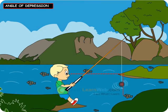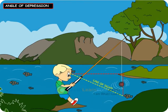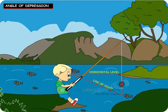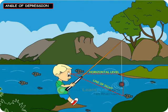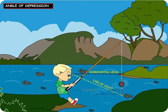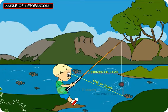The line of sight is below horizontal level. The angle so formed by the line of sight with the horizontal is called the angle of depression. Thus,